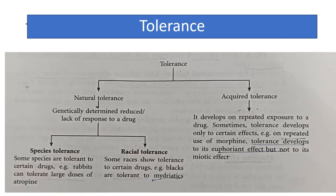Tolerance types: natural tolerance is genetically determined and results in reduced or lack of response to a drug. Species tolerance — rabbits can tolerate larger doses of atropine because they contain the enzyme atropinase. Racial tolerance — Black people are tolerant to mydriasis.